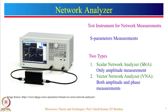SNA is capable of displaying only the magnitudes of the S-parameters, so only amplitude measurements are done. Whereas VNA is capable of displaying both magnitude as well as phase information of the S-parameters. A typical network analyzer has an embedded display and various controls, with two ports acting as in and out ports. The DUT whose S-parameters are to be measured is connected between these two ports.